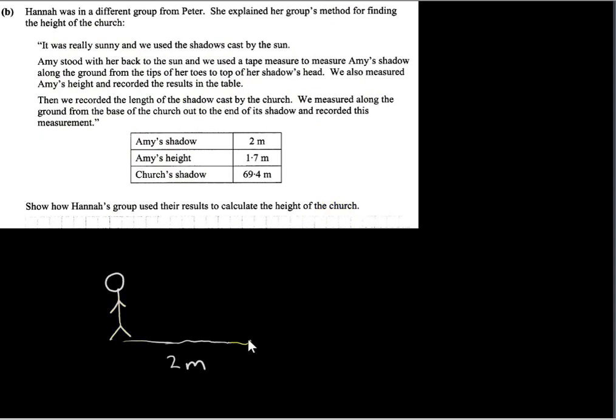So here is Amy. Here is the length of her shadow, it's two meters long. So the sun's rays are coming along here. The sun is somewhere here. We have Amy's height, it's 1.7 meters.